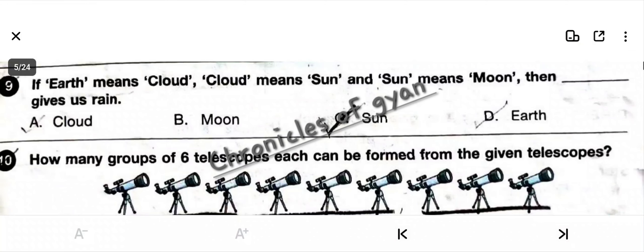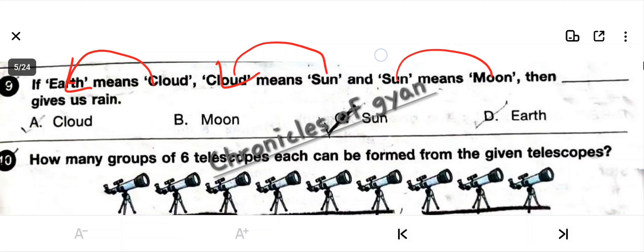Question 9: If Earth means cloud, cloud means sun, and sun means moon, then what gives us rain? Follow the rule: Earth means cloud. Rain comes from Earth, but in this substitution, Earth is called cloud. So cloud gives us rain. The correct answer is cloud.